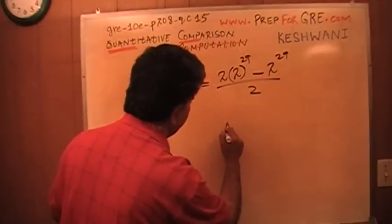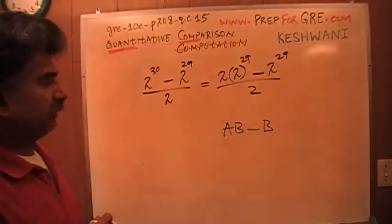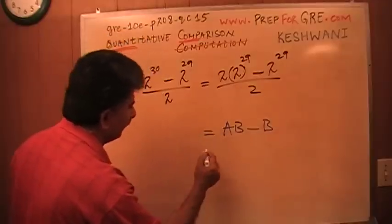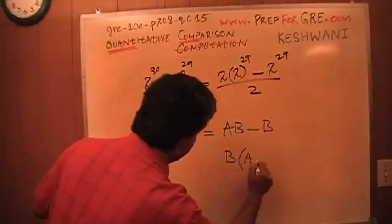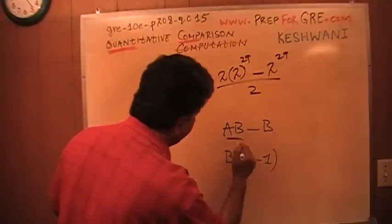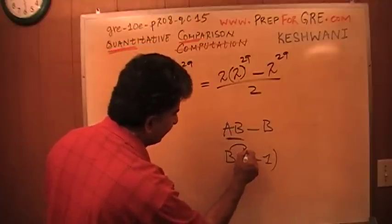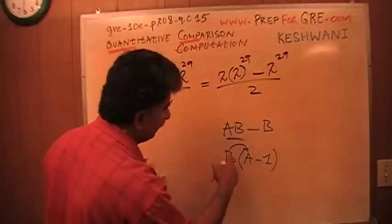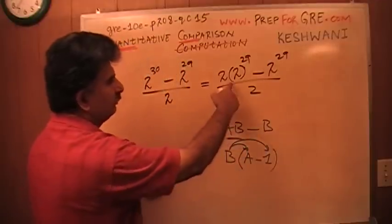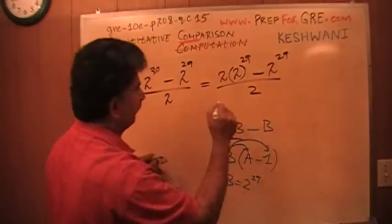If I tell you that A times B minus B, what would you do with this quantity? You can take out the B common. B can be taken out common. This is same as B times A minus 1. That is the same thing. I look at this term and I take out the B common. If I take out the B I'm left with A. Here if I take out the B I'm left with 1. B times A is AB and then minus B. That's what I'm going to do here. My B here is 2 raised to 29, which is what I'm going to do here.